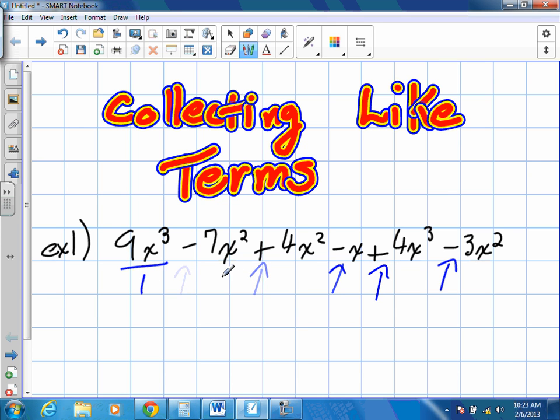which means we have 1, 2, 3, 4, 5, 6 different terms in this question. So we're going to keep that in mind. We're going to simplify these terms by putting terms that are technically alike into one number.